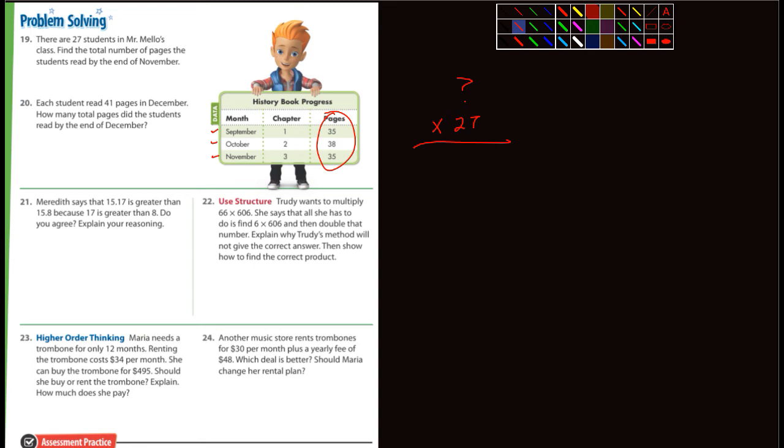Number 20 says each student read 41 pages in December. How many total pages does the students read by the end of December? So whatever your answer is, then you're going to add to that. It's going to be 41 pages in December times 27. And then you're going to add whatever that answer is. It just asks how many total pages do the students read. Yeah, that's right. Total pages. So you're including these three months and December. So that's how you would do it. You would add them up.